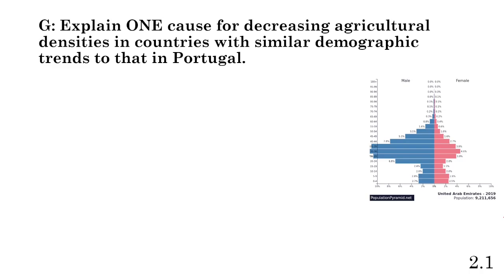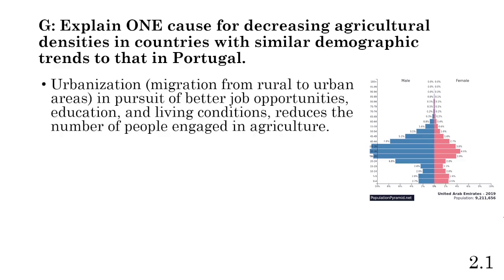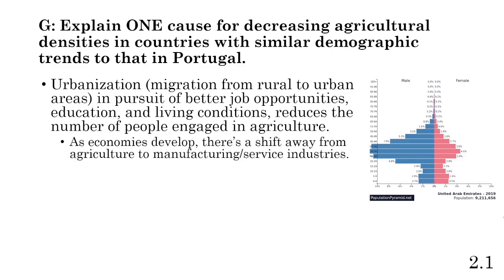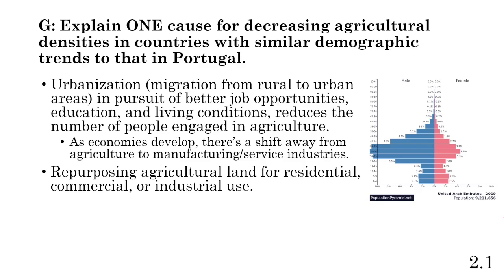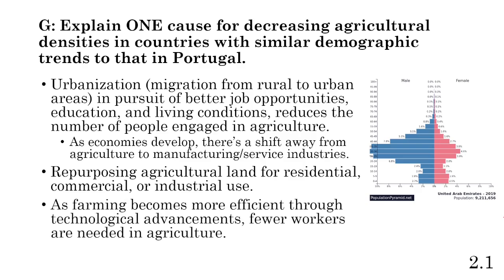Part G: explain one cause for decreasing agriculture densities in countries with similar demographic trends to Portugal. Urbanization driven by better job opportunities, education, and living conditions reduces the number of people engaged in agriculture, decreasing agriculture density. As economies develop, there's a shift from agriculture to manufacturing to service industries, and agricultural land gets repurposed for residential, commercial, or industrial use. Furthermore, technological advancements like mechanization and sprinkler systems make farming more efficient, meaning fewer workers are needed.